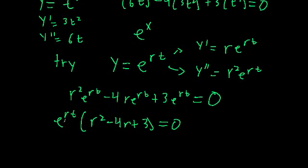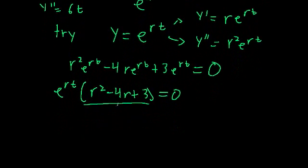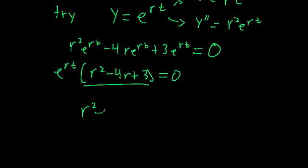The exponential function never equals 0 for any particular value of t — it approaches 0 as t goes to negative infinity, but never actually reaches 0. So in order for this expression to hold true, the other factor must equal 0: r squared minus 4r plus 3 equals 0.